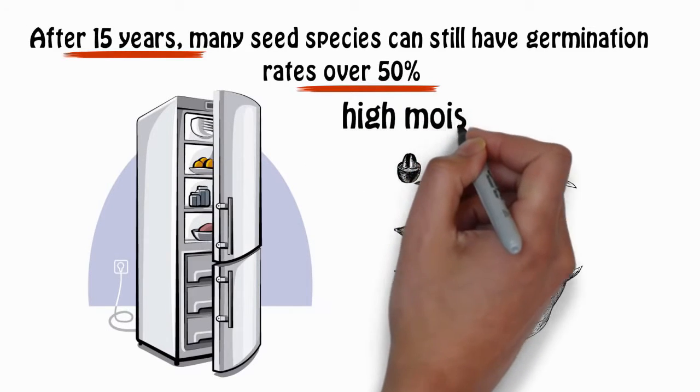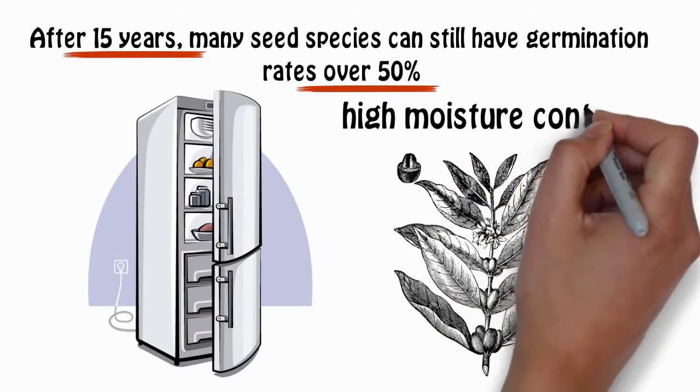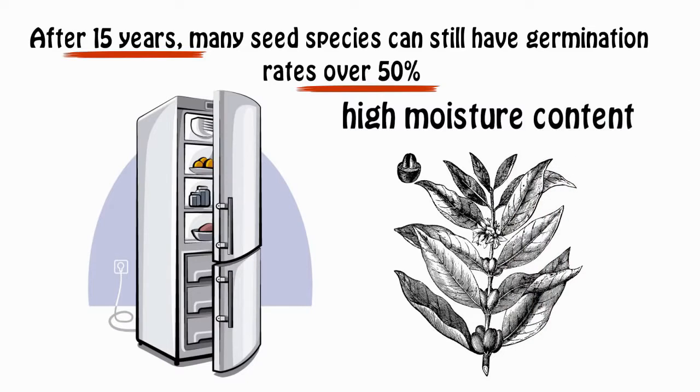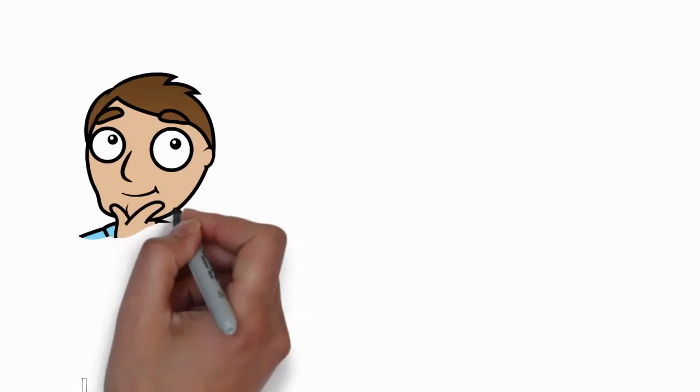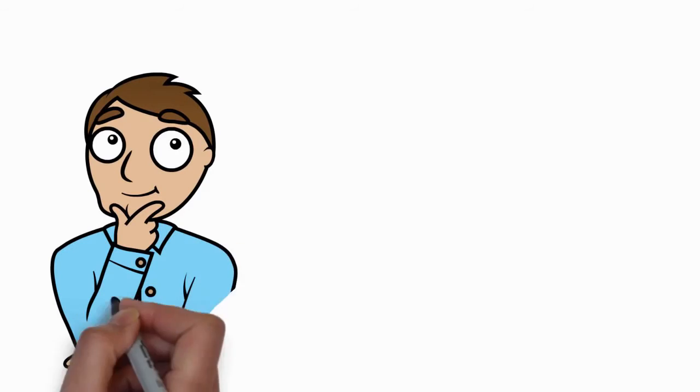In fact, when high moisture content crop year seeds are sealed in an airtight pouch, it locks the high moisture in, making it impossible for the seeds to benefit from natural drying. This can actually shorten their germinating lifespan.